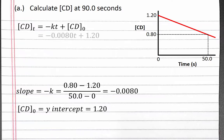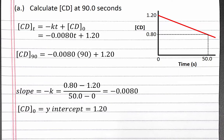Plugging these values into our integrated rate law, we get the concentration of CD at time T equals negative 0.0080 times time plus 1.2. If we solve for T equals 90 seconds, we get 0.48 molar for the concentration of CD.